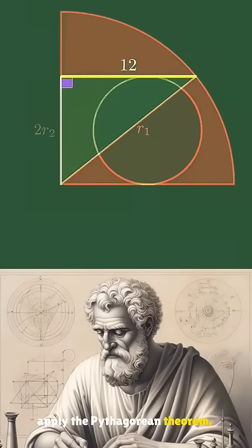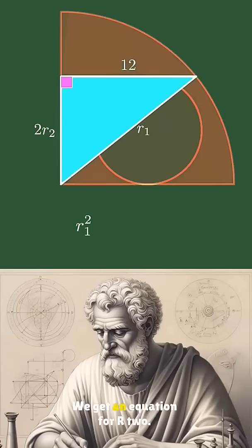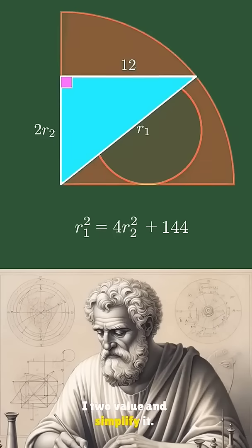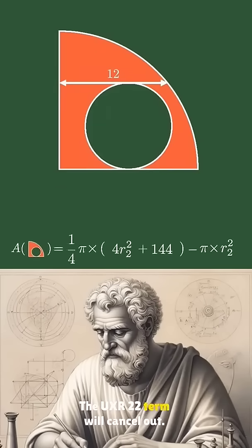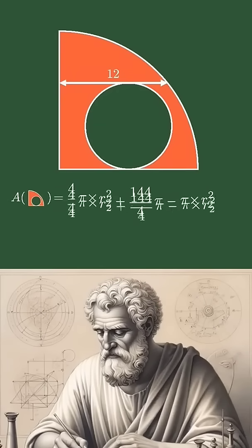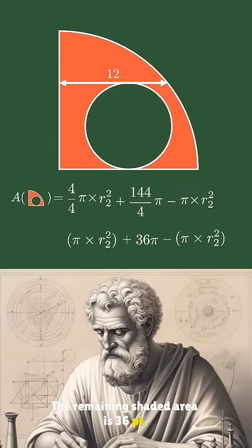Apply the Pythagorean theorem to get an equation: r1² = (2r2)² + 12². Substitute this value and simplify. The r2² terms will cancel out, and the remaining shaded area is 36π.